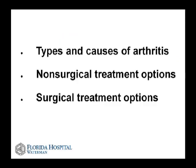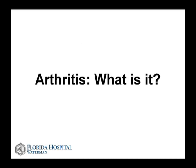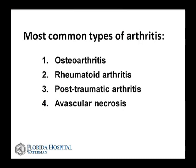Let's talk about arthritis and the types and causes of arthritis. We'll talk about non-surgical treatment options as well as surgical treatment options. Arthritis — what is arthritis? I get this question a lot in the office. The most common type of arthritis is osteoarthritis, which is a wear-and-tear type arthritis where the cartilage of the joint wears out.